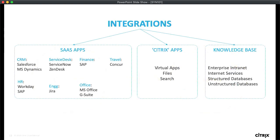This leads into the next section — what are the various applications we can support. We start with a basic set of popular, common applications that will grow over time, and we also support what comes with Citrix Workspace standards including files and search. But eventually the goal is to integrate and interact with the knowledge base within the enterprise — including potentially intranet information, depending on the kind of information the user is looking for, spread across structured and unstructured databases. Once you understand the context of the user and what they're trying to get done, you should be able to gather and present that information.